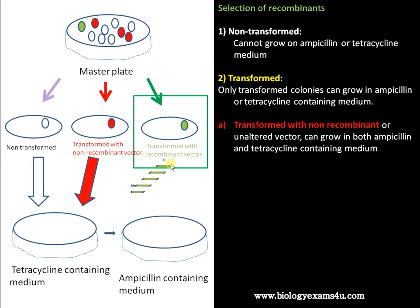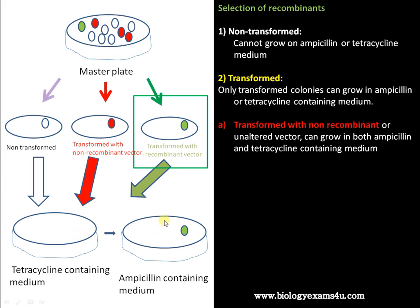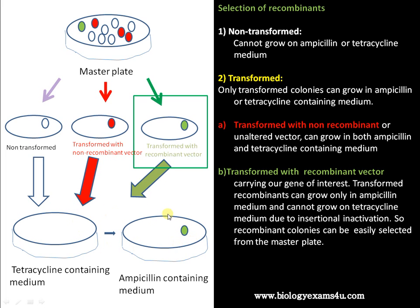The third group is the one we need to select — transformed with recombinant vector. This group cannot grow in tetracycline-containing medium, as we have inserted our gene of interest in that region, resulting in insertional inactivation of the tetracycline resistance gene. However, this group can grow in ampicillin-containing medium. So the colonies capable of growing in ampicillin-containing medium are the ones transformed with our desired gene. We select them by comparing with the master plate using the technique of insertional inactivation.